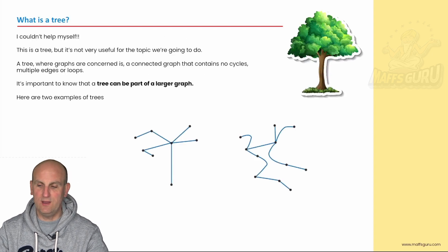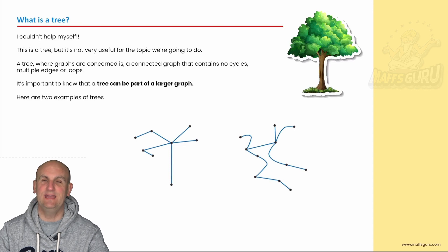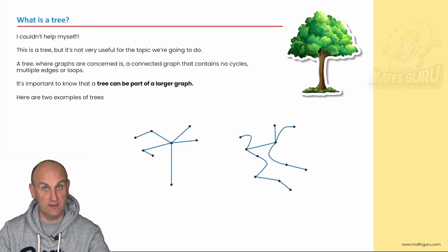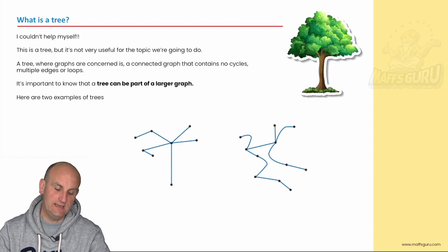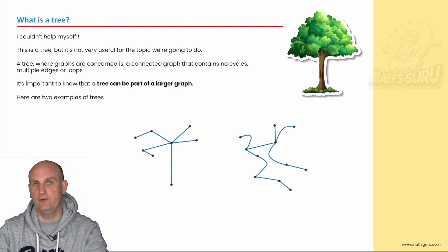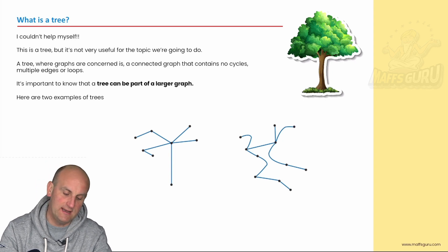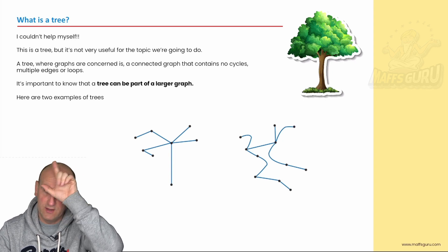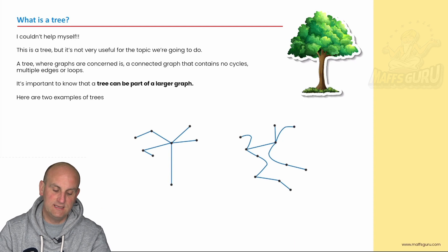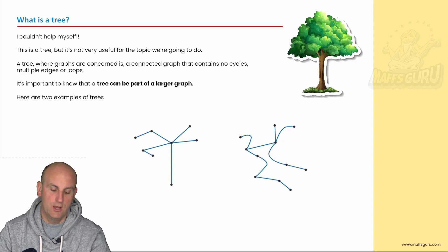But let's go with what is a tree? And as you can see, yes there is the cheeky tree. I know, couldn't help myself, it's a pretty nice clip art. But a tree is not very useful for the topic we're gonna do as in that tree. But a tree is where graphs are concerned. It is a connected graph, no loners, that contains no cycles, no multiple edges and no loops.